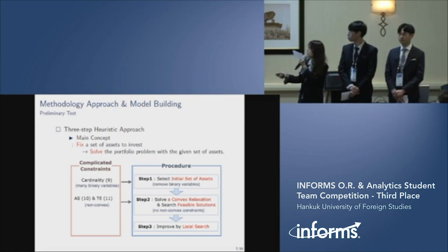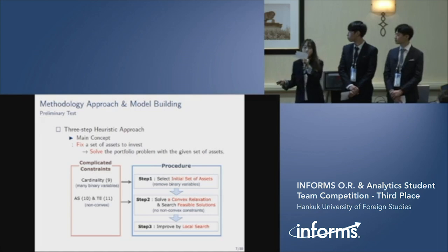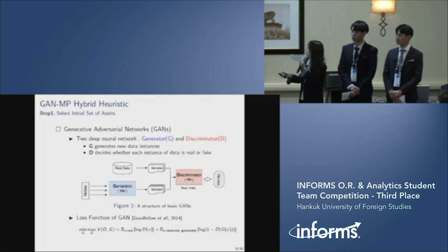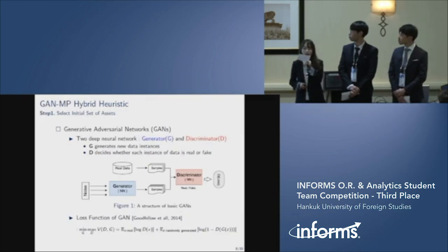In step two, we solve a convex relaxation and a feasible solution is found for the tracking error and active share. And finally, step three, we do a local search to find a better solution. From now on, let me introduce our algorithm step by step.